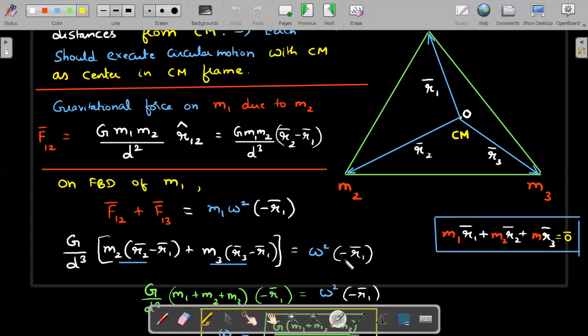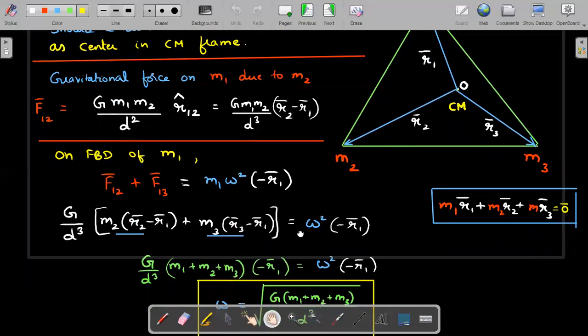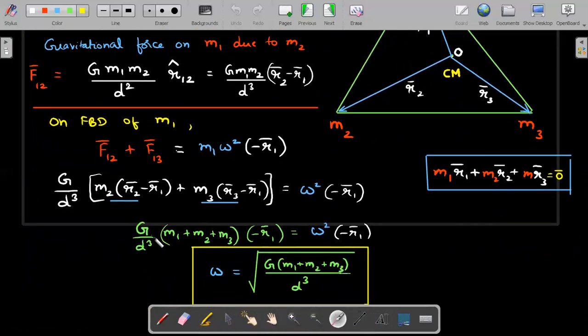So M2 minus R1 term will be there, M3 minus R1 term will be there, and I'll get from here an M1 R1 term also with a minus sign. So I can take M1 plus M2 plus M3 out as common. And then we'll get a neat, simple expression that it's common and minus R1 bar.